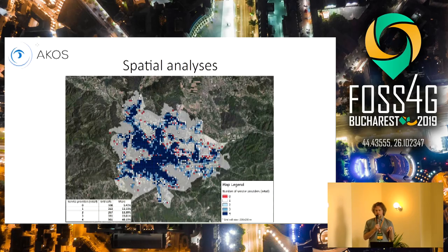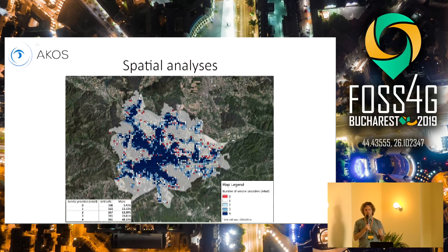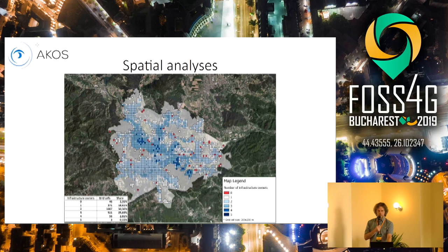Because we are not allowed to have data from operators at a single address level, we use different grid sizes — like this one is 200 meters — and then we summarize on one grid cell. We can then easily show results like number of service providers or number of infrastructure owners. We have four main mobile or telecommunication operators in my country and some smaller ones, but the really big ones cover almost the whole country, so there is big competition for customers.